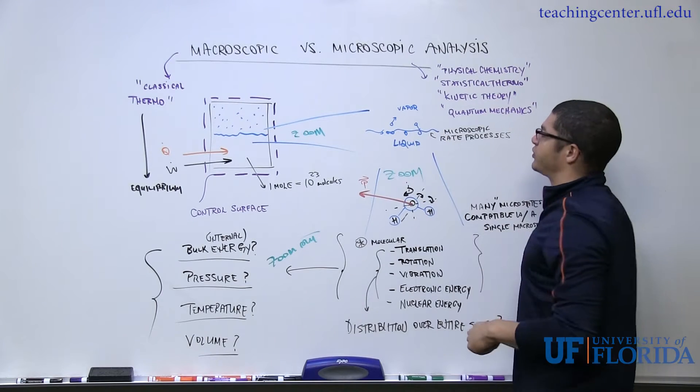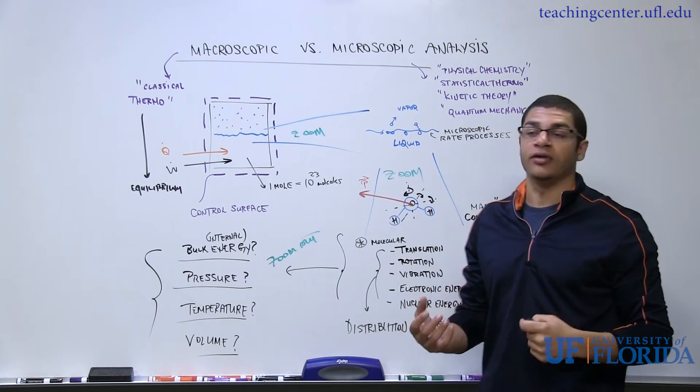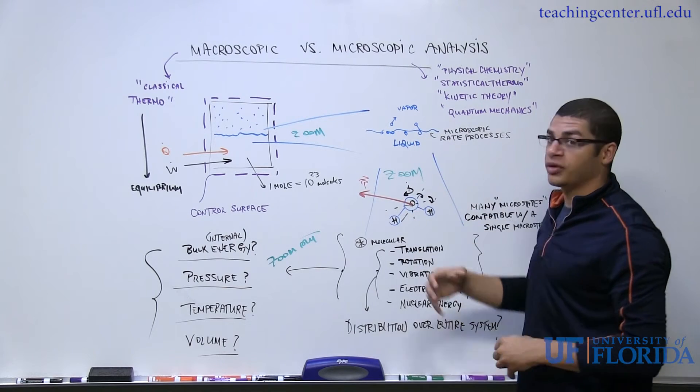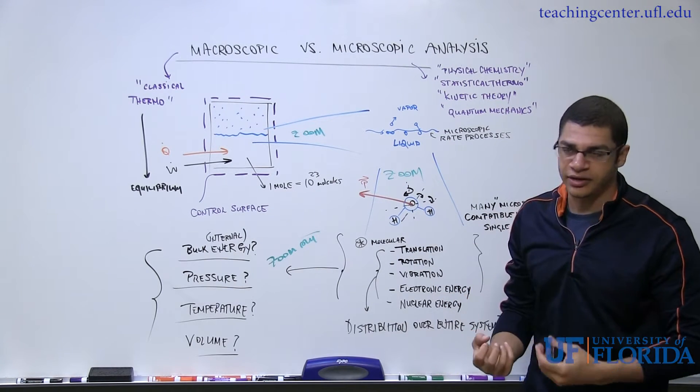There could be some molecules in the vapor phase that don't have enough energy to simply collide with this liquid surface and bounce off, but they may be captured by the liquid surface to condense in.